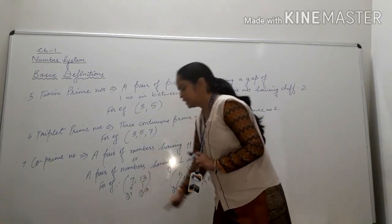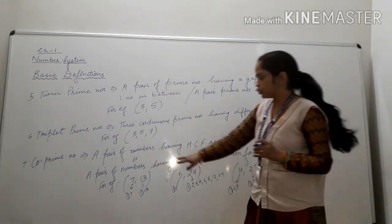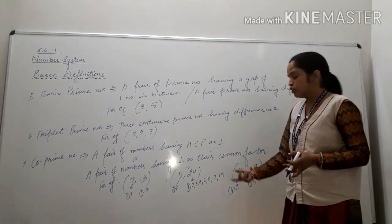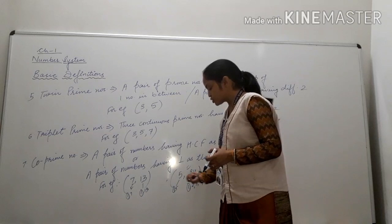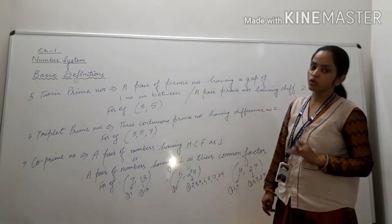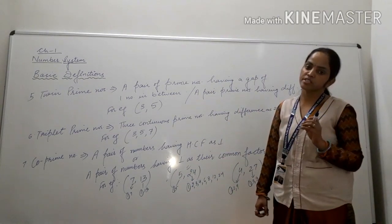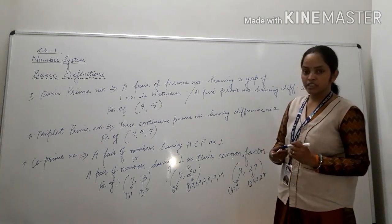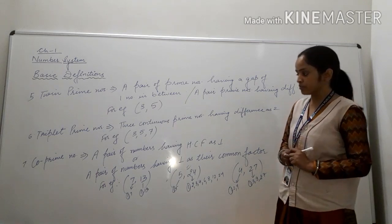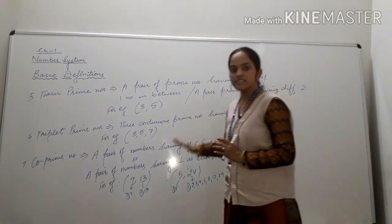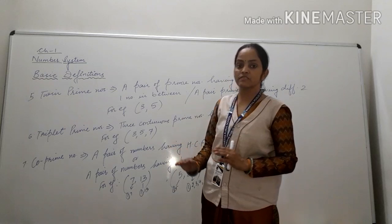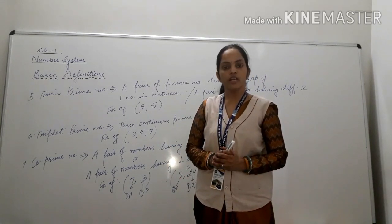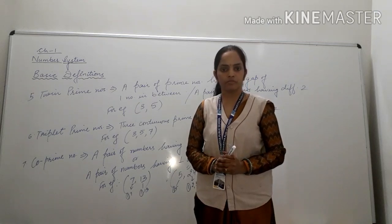So co-prime numbers are a pair of numbers whose only common factor is 1. Both numbers can be prime, or one can be composite and the other prime, or both can be composite — what matters is that the highest common factor must be 1. It is very important, especially in 9th class. Please recall all these definitions. In our next class, we will study how to find rational numbers between given numbers. Thank you.